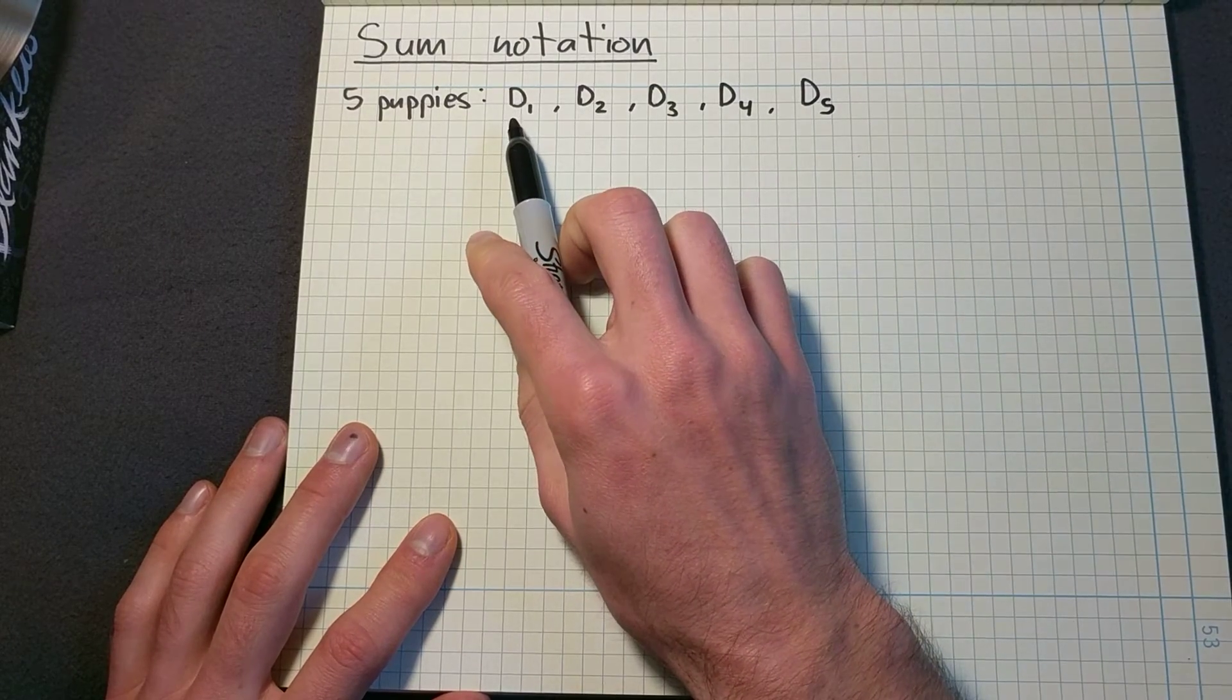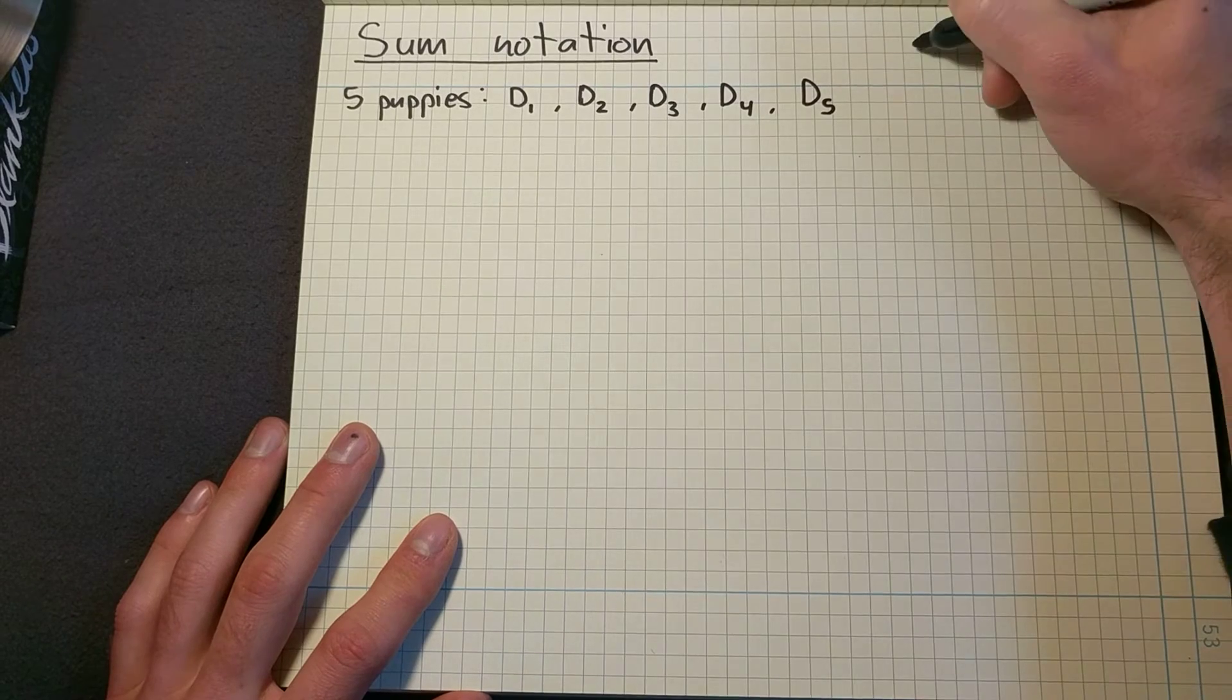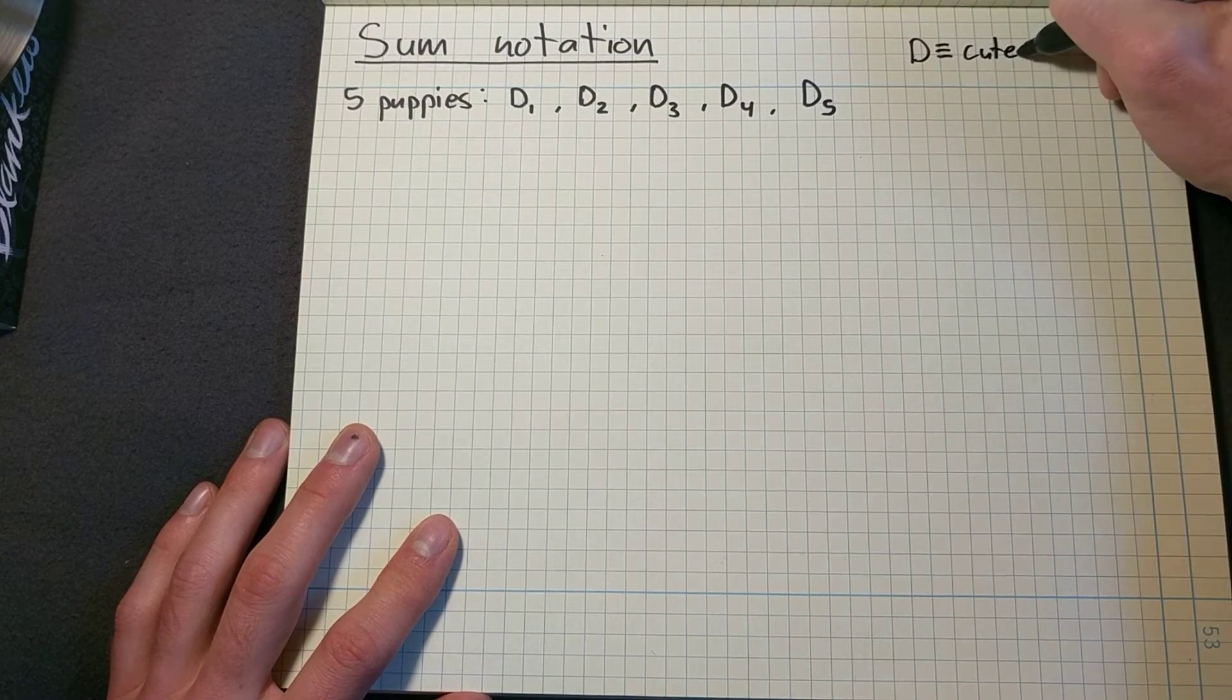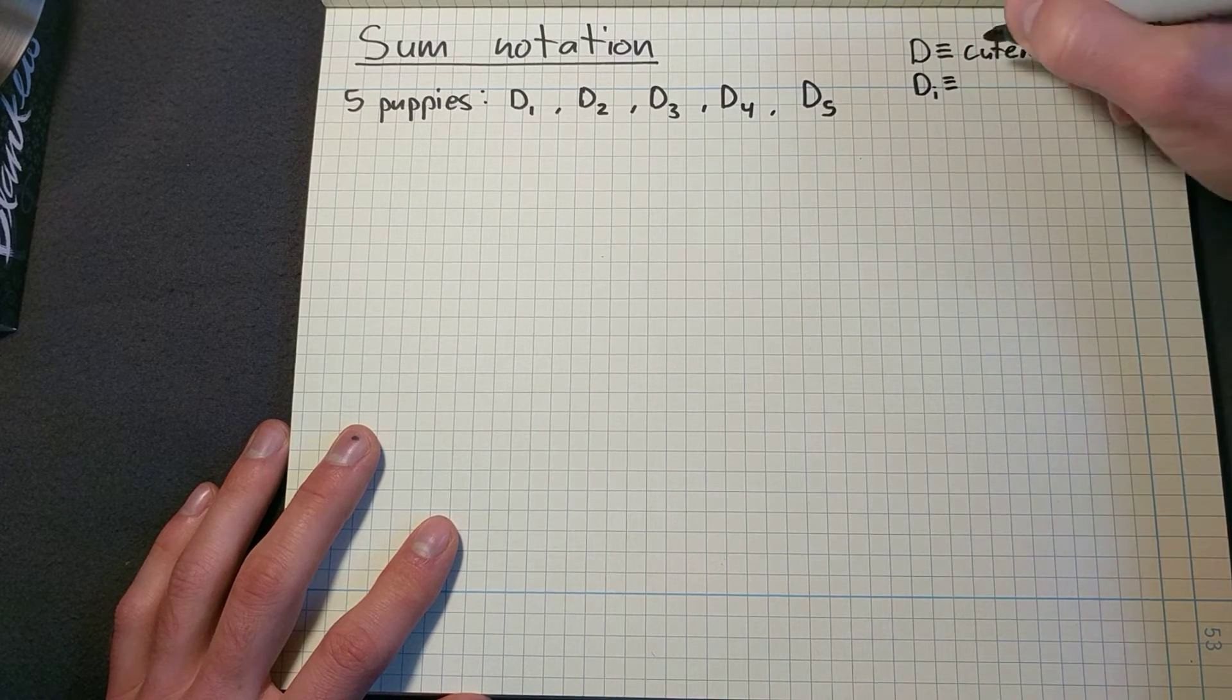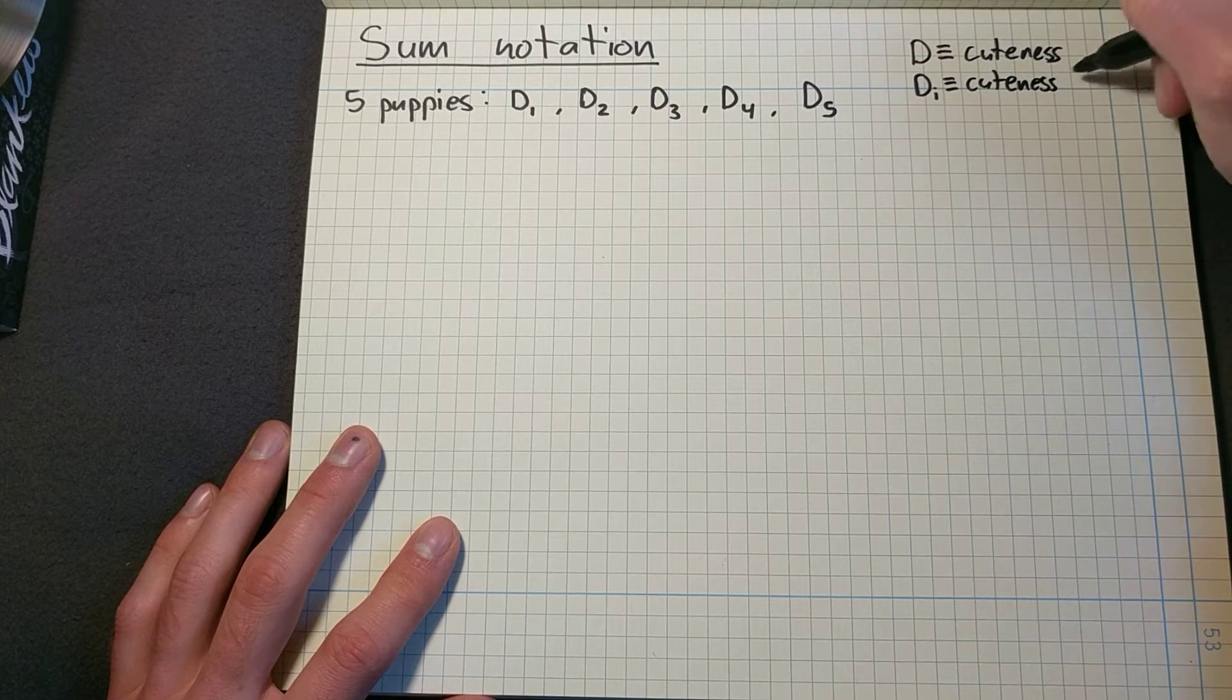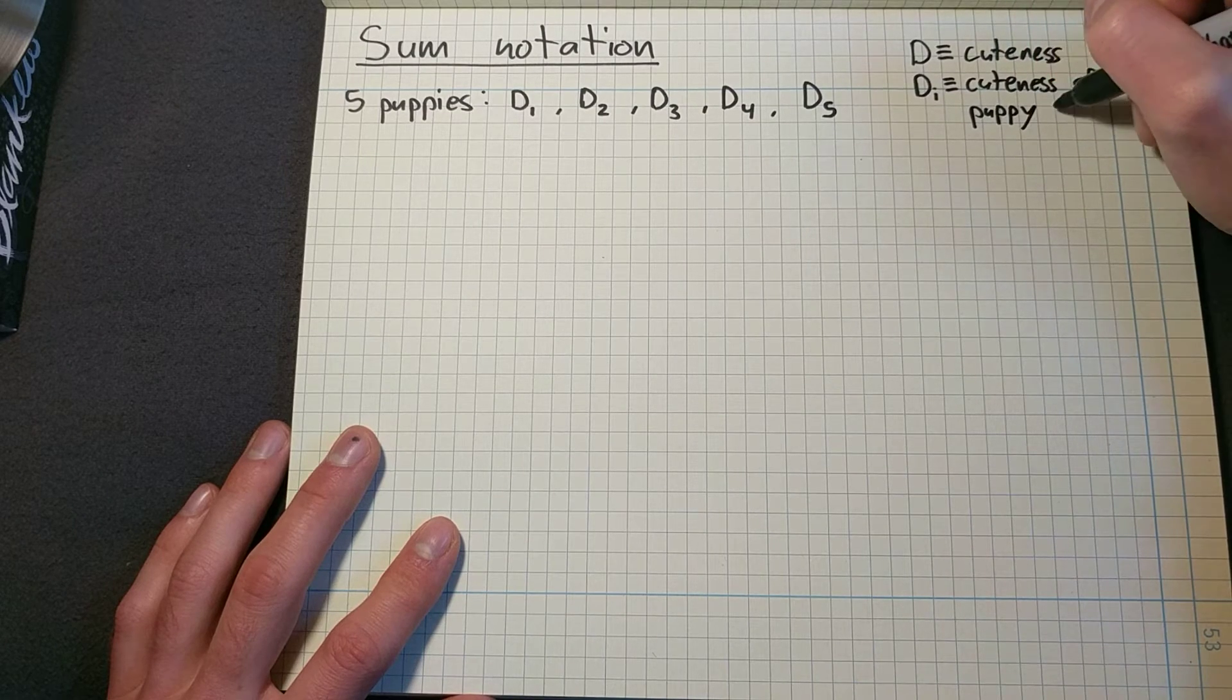Let's say that D is a measurement of how cute this dog is. So D is defined as cuteness, and DI is cuteness of puppy I.